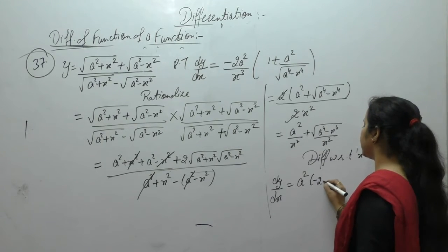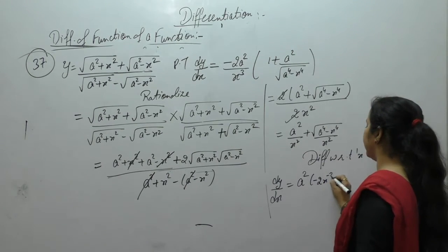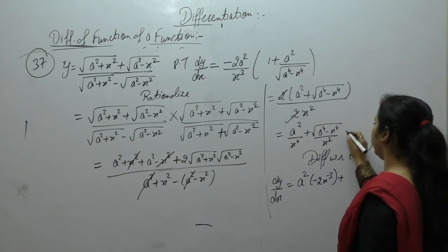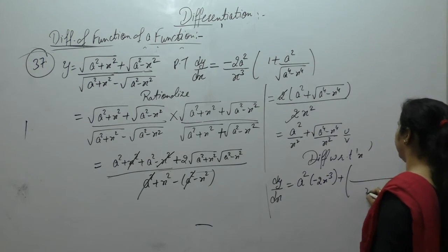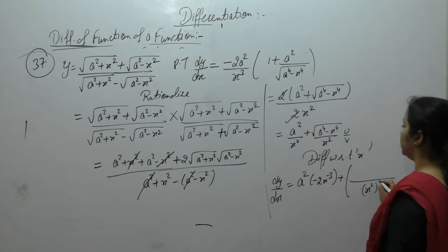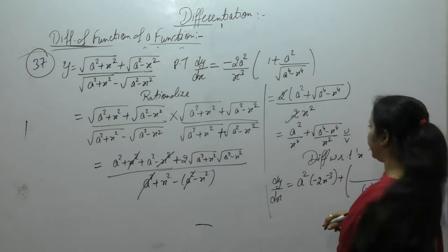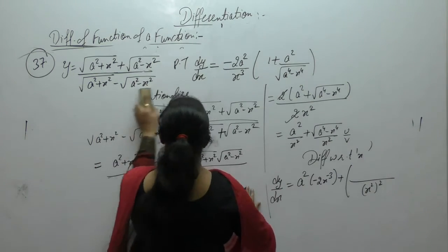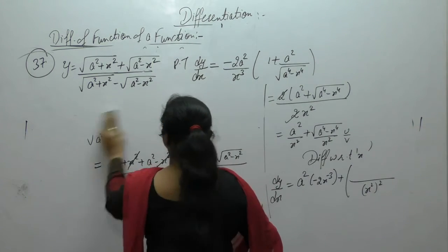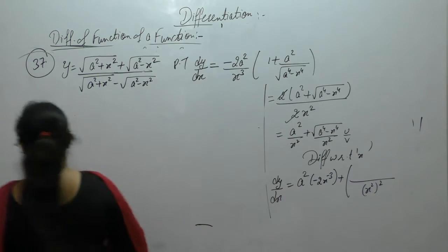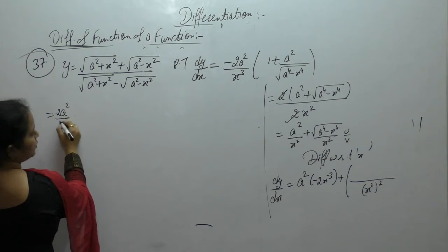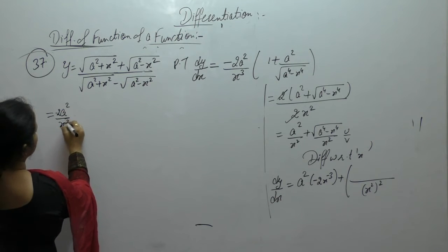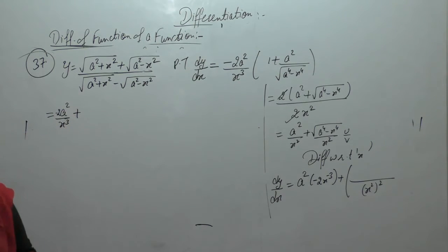We have x² minus 2 over √(a⁴ minus x⁴). Here we will use the u upon v rule, v squared. u dash is the derivative of the first term. So we get a² minus 2 upon x³ plus x⁴.